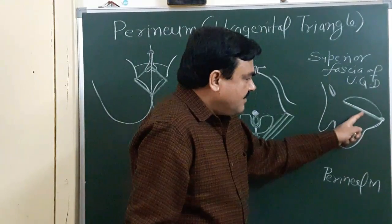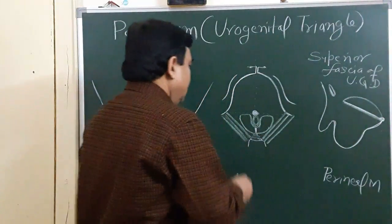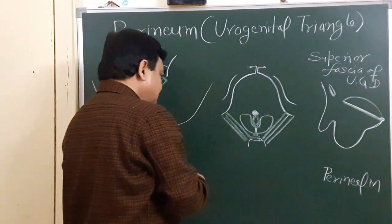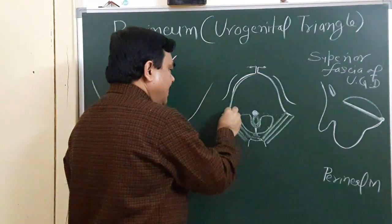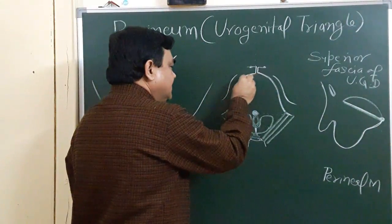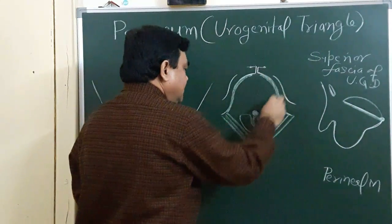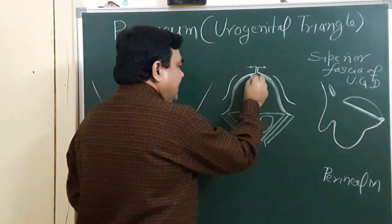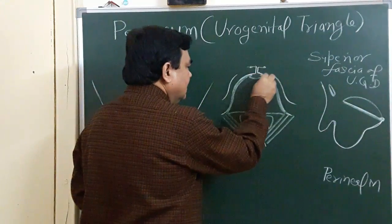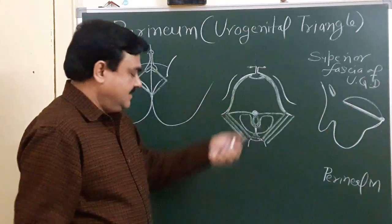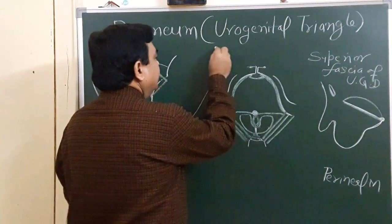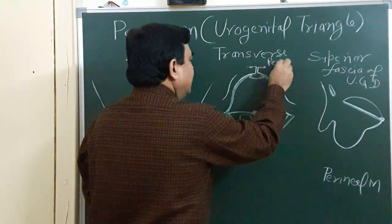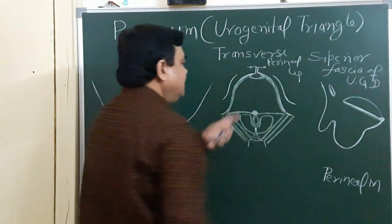The perineal membrane is triangular in shape. Its margins are attached with the ischiopubic ramus on each side. Anteriorly, at the apex, it becomes thickened and forms the transverse perineal ligament.